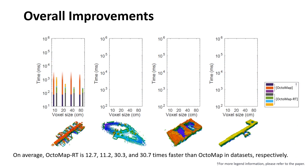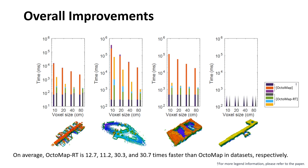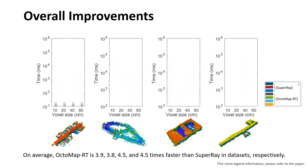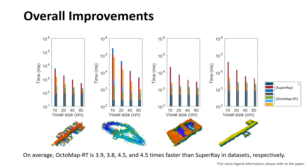On average, OctomapRT is 12.7, 11.2, 30.3, and 30.7 times faster than Octomap from the left of the data sets, respectively. OctomapRT is also 3.9, 3.8, 4.5, and 4.5 times faster than SuperRay from the left of the data set, respectively.